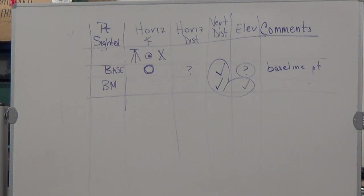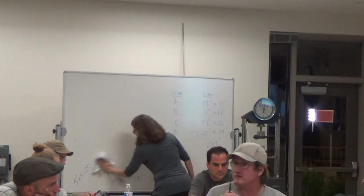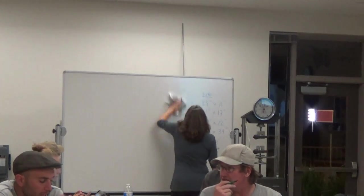So in order to calculate the elevation of point one, you need to know the elevation of the benchmark plus V1 minus the V of the benchmark. So we probably want to draw that out maybe.